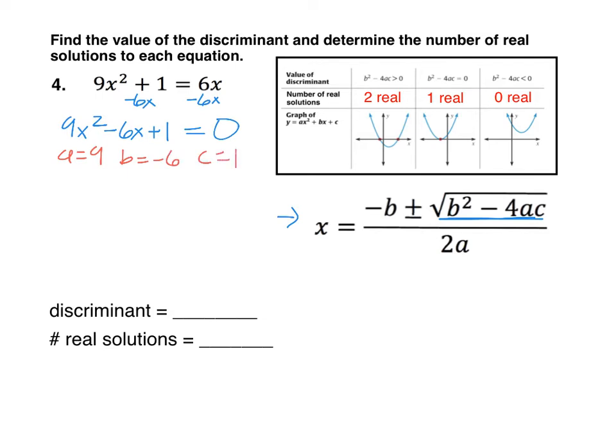And then we just plug those numbers into the formula for the discriminant which is b squared minus 4ac. So substitute those numbers in. Always put parentheses around it when you're substituting. And then if you put that whole expression into your calculator, I would encourage you to do that. That way you don't make an error with your order of operations.